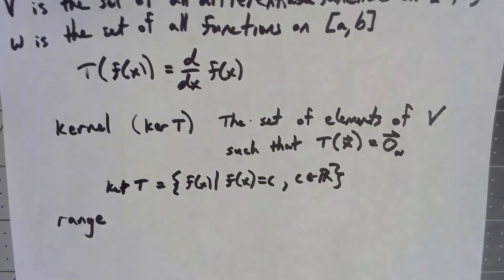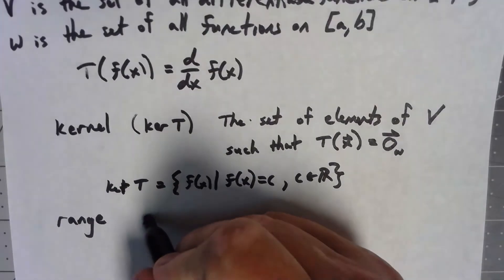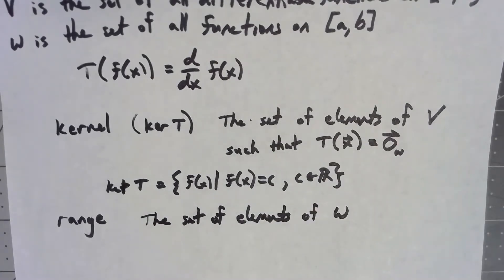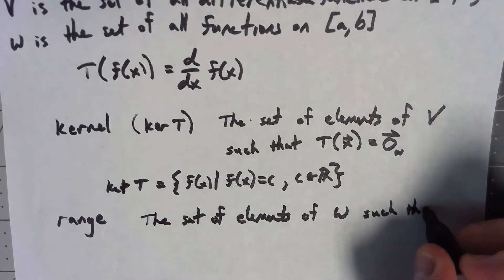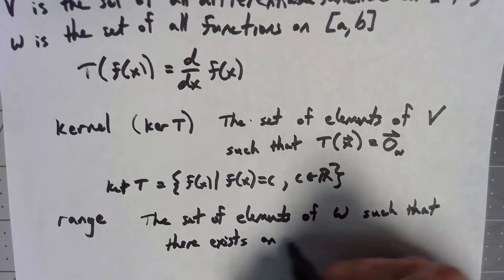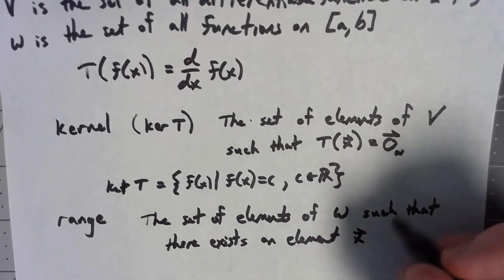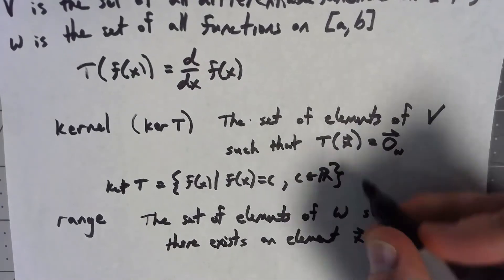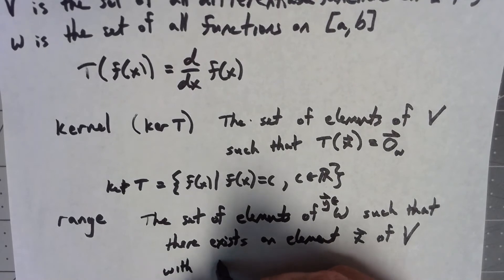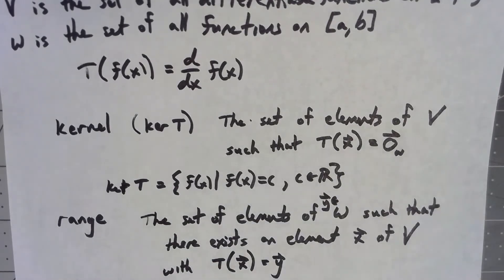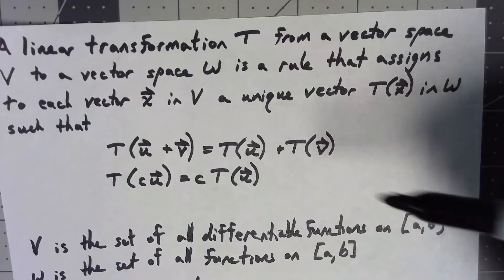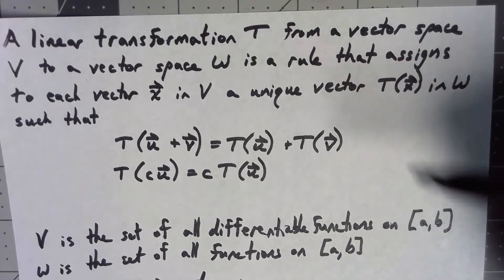The range is the set of elements of W such that there exists an element x of V. Now let's go ahead and say this is y in W. So there exists an element x of V with T of x equal to y. Basically, when we define our T and V for the linear transformation, there's nothing that says that everything in W is the output of something in V.